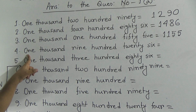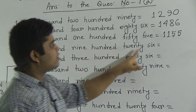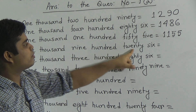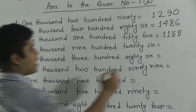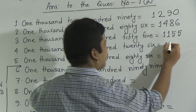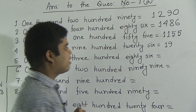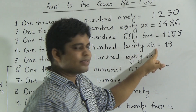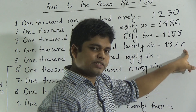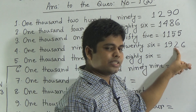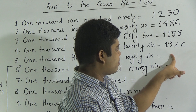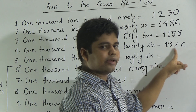Next: 1926. I repeat — 1926. So 1000 means write 1 first. Next, 900 — what do you mean by 900? 900 means we write 9. After that, 26 — 26 means 2 and 6. So 1926. Here, 6 is in 1's place, 2 is in 10's place, 9 is in 100's place, and 1 is in 1000's place. So we can read this number as 1926.